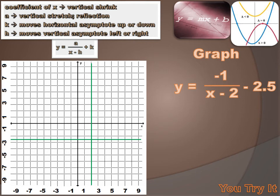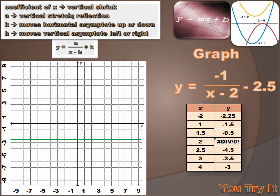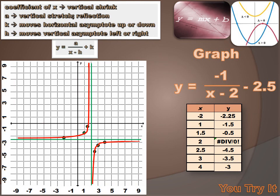Now I'm going to pick some values for x and calculate what y values result. I want to pick x values close to the intersection of my two asymptotes — minus 2, 1, 1 and a half, 2, 2 and a half, 3, and 4. I calculated the y values that resulted and plotted those points. You'll notice that I am not primarily in the first and third quadrants — I've got a negative a value, so I've reflected around the y-axis. I'll draw a line between those points, and I'll have drawn the graph for y equals minus 1 over x minus 2 minus 2 and a half.